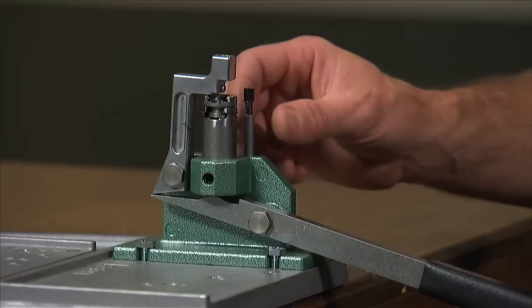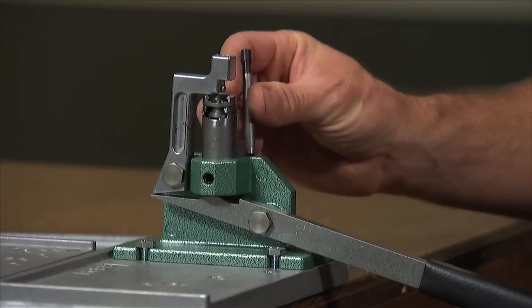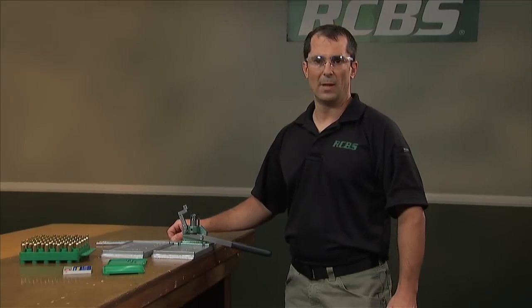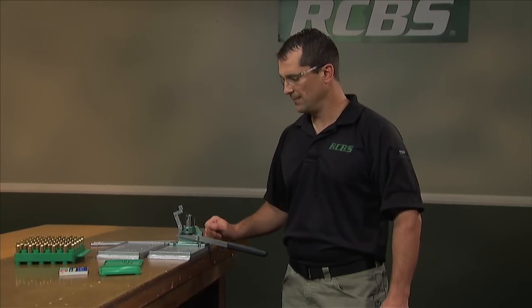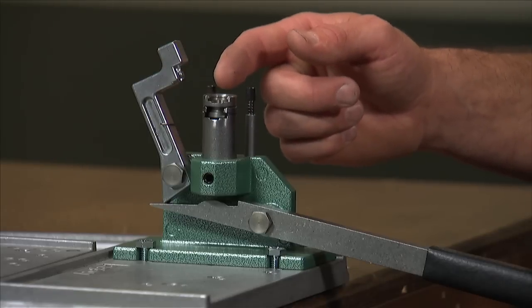The unit comes standard with two primer plugs, a large and a small. It comes standard with two feed tubes that double as a pickup tube, large and small. And this unit will accept RCBS standard shell holders.